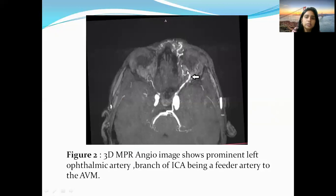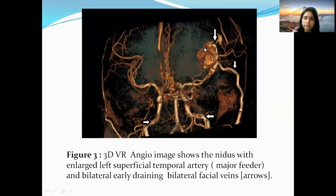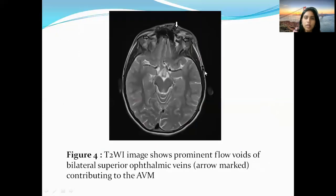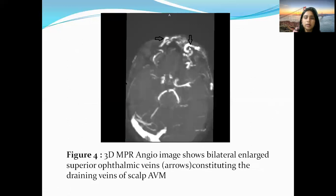The major feeder to this nidus is the left ophthalmic artery, which is a branch of the left internal carotid artery, contributing to the AVM. On the 3D VR angio image, the bigger major nidus is fed by the superficial temporal artery on the left side, which is a branch of the external carotid artery. The early draining veins are the bilateral facial veins, also constituting this AVM. The intraorbital component of the AVM shows bilateral superior ophthalmic veins giving prominent flow voids. On the 3D MPR angio image, bilateral enlarged superior ophthalmic veins are seen as the draining veins for the scalp AVM.